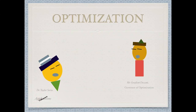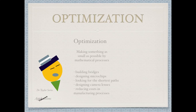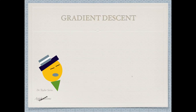To summarize: optimization is the process of making something as small as possible using mathematical processes. It is used in building bridges, designing microchips, finding shortest paths in navigation systems, designing camera lenses, and in many other processes such as reducing costs in manufacturing. If there is one technique that has distinguished itself in the City of Optimization, it is the process of gradient descent.